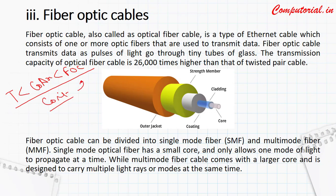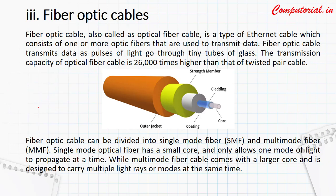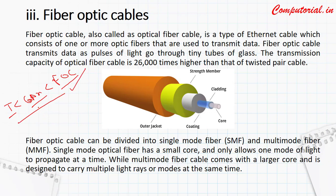Fiber optic cable is the most expensive. Then we have coaxial cable, and then twisted pair. If we talk about reliability, twisted pair cable is less reliable, then coaxial, and fiber optic cable is the most reliable. The range follows the same pattern — fiber optic cable has the highest range, then coaxial, and twisted pair has the lowest range.